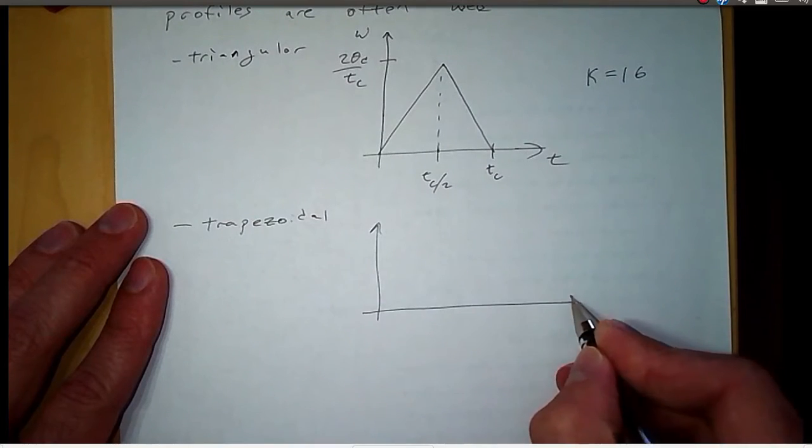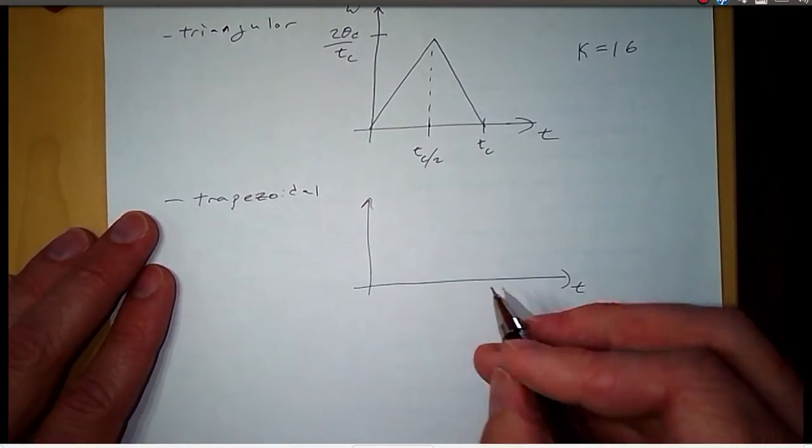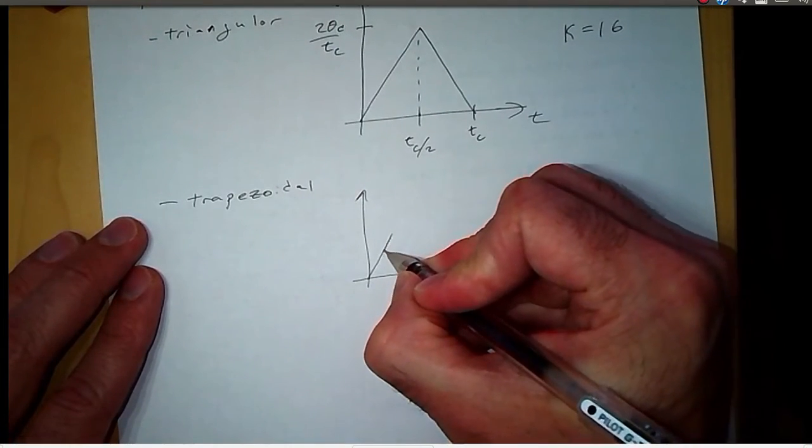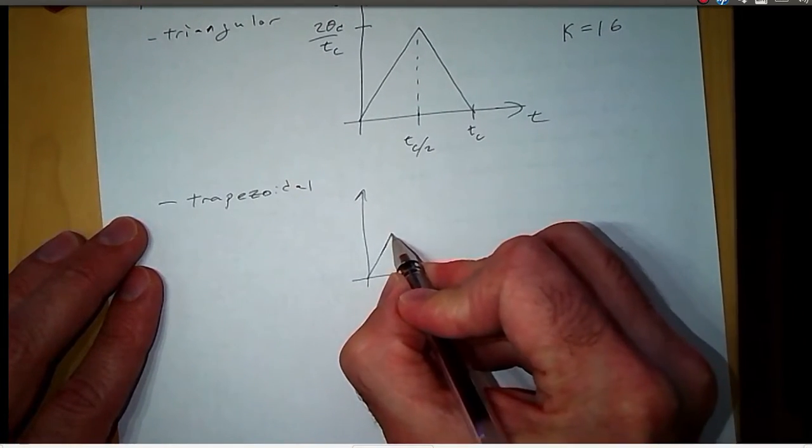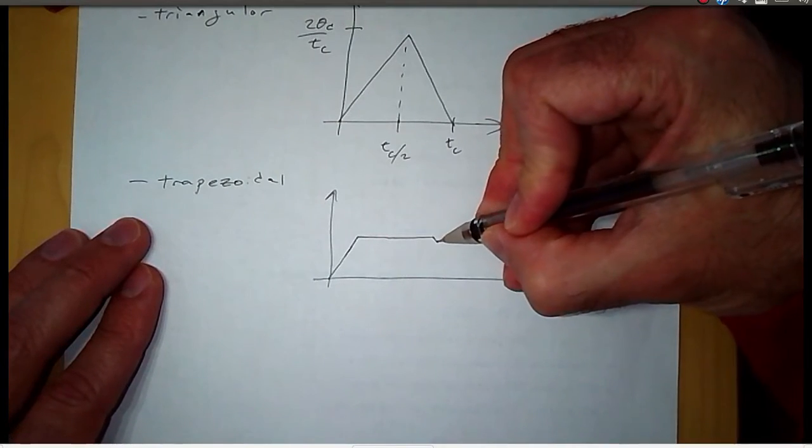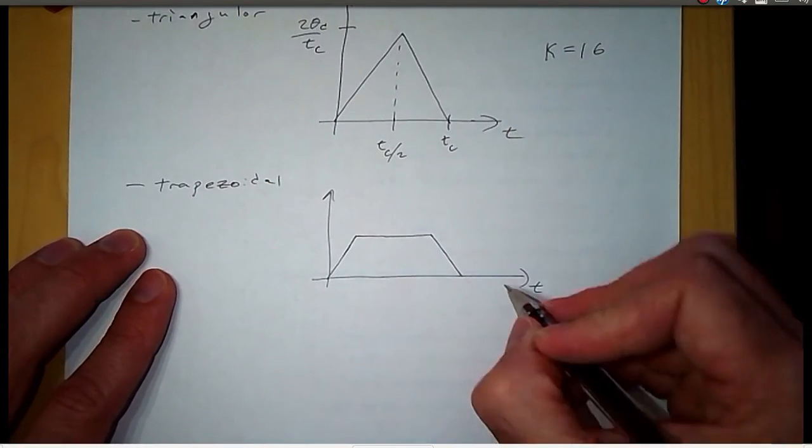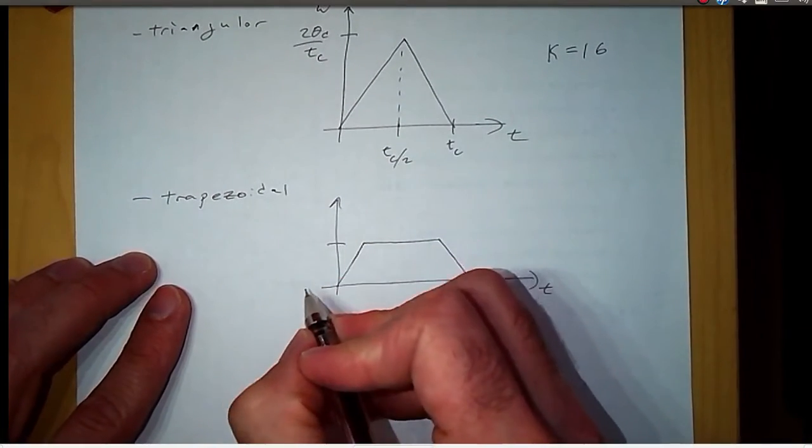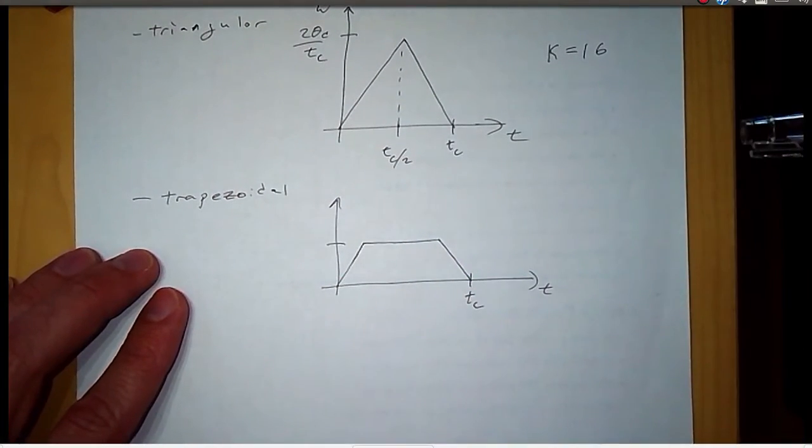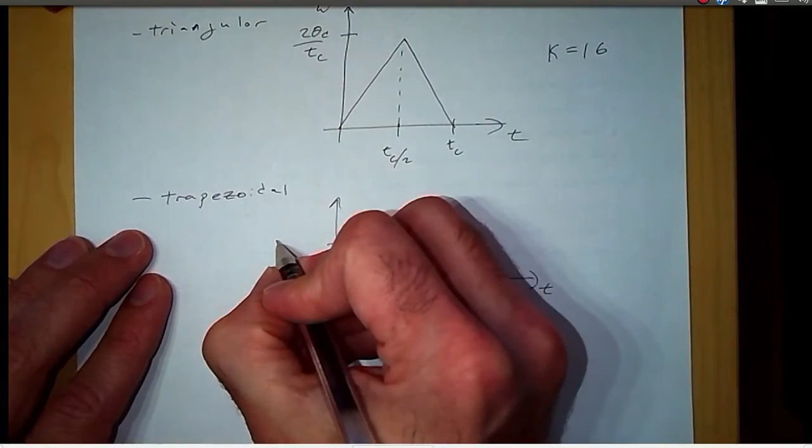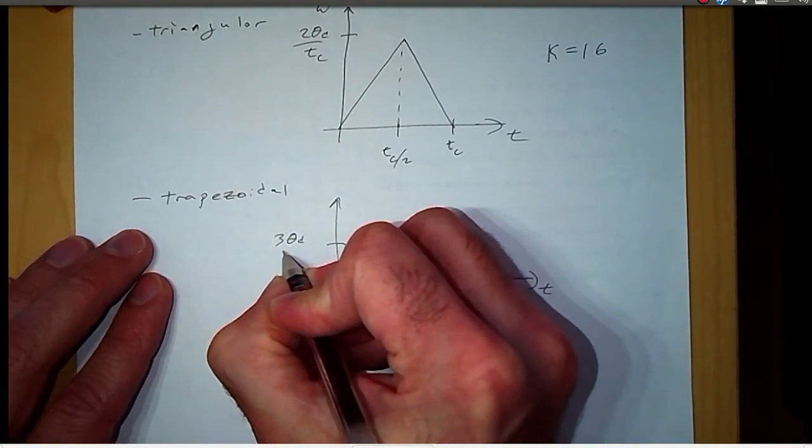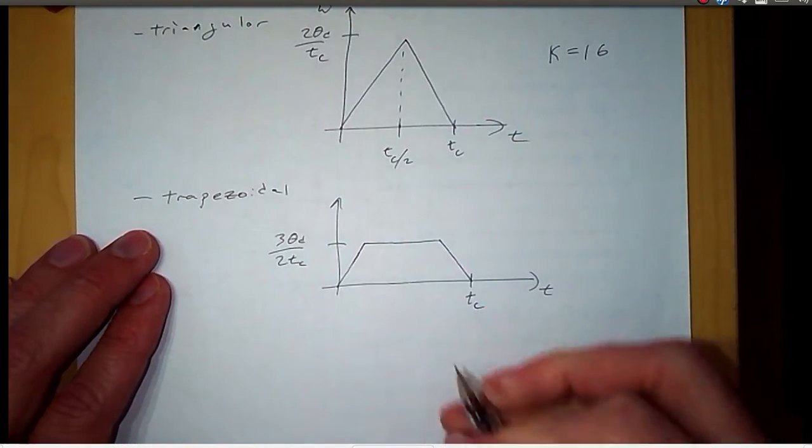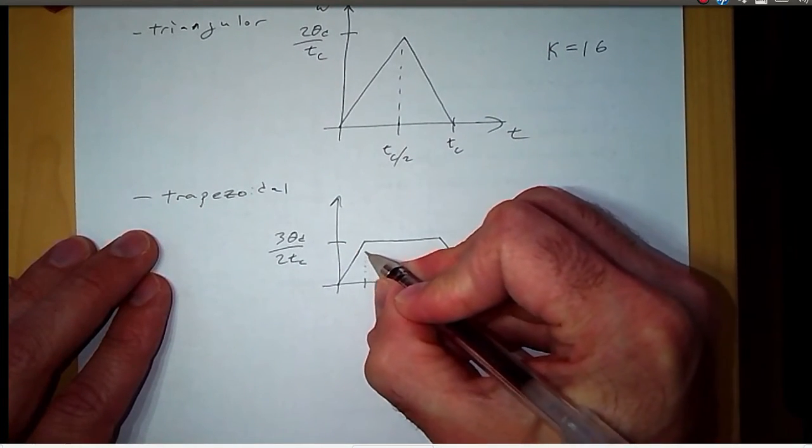We ramp up to a speed, and then we hold that speed, and then we decelerate. So here's T C, and in this case, the maximum speed is the same as for the parabolic.